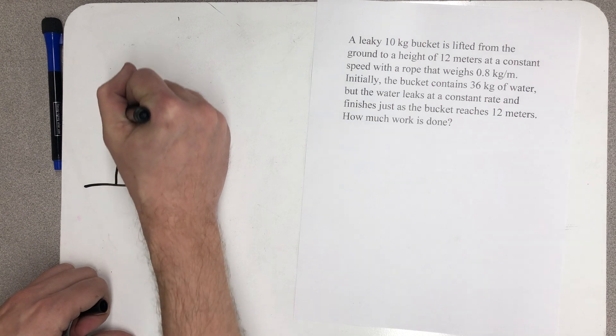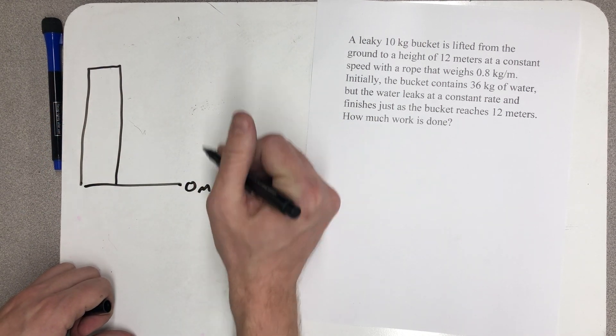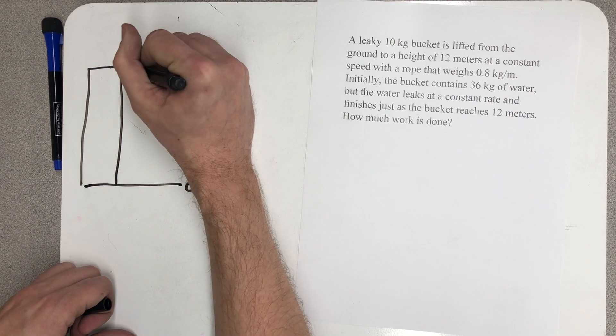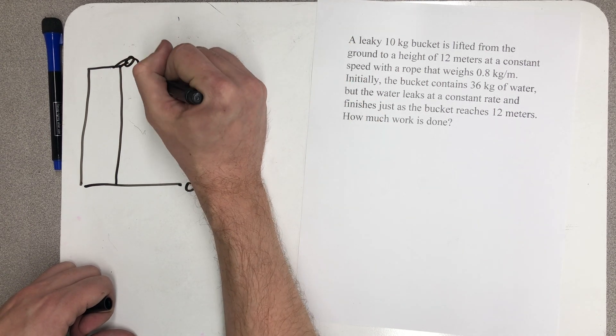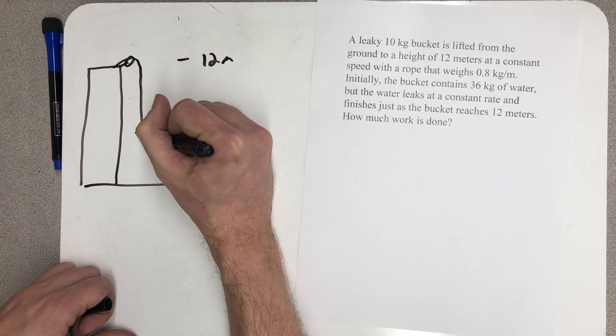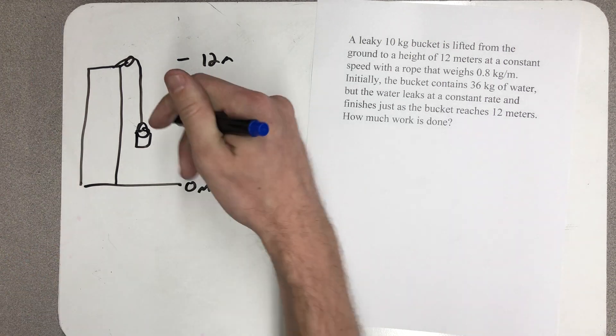I'm just going to imagine what's going on here. My bucket starts down here at zero meters, eventually comes up to a height of 12 meters. So I'm imagining a system like this. At some point in the middle here there's been water in the bucket and it's leaking out at a constant rate.